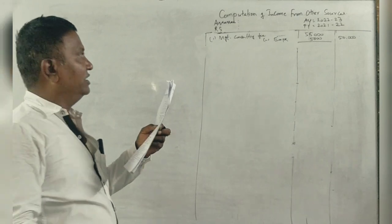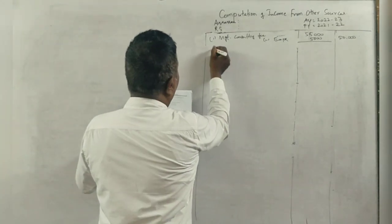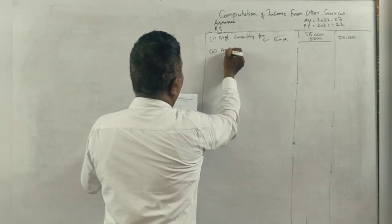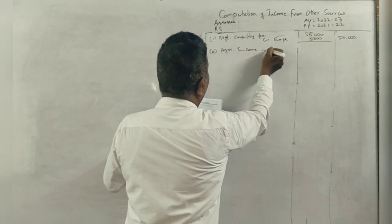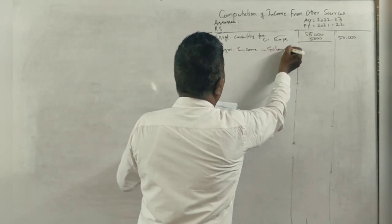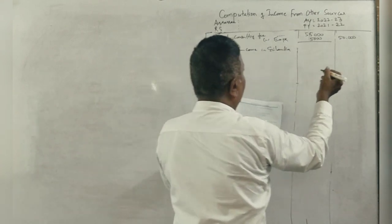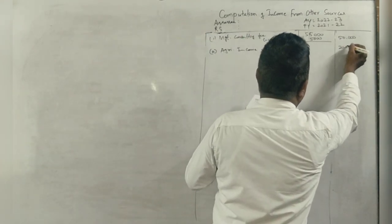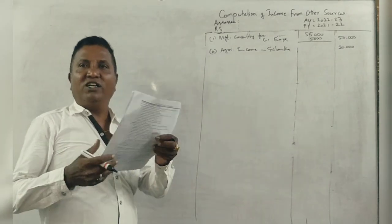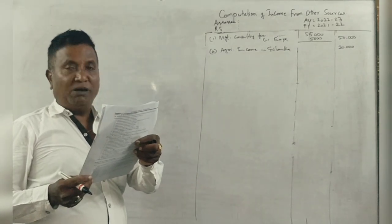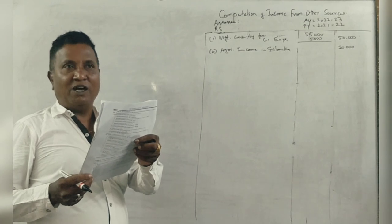Income from agriculture in Sri Lanka. Agri income in Sri Lanka, this is about Rs. 20,000. This is another country, not our country, so it's treated differently.